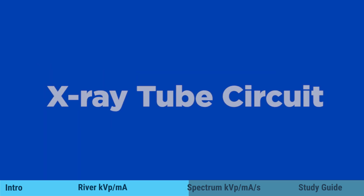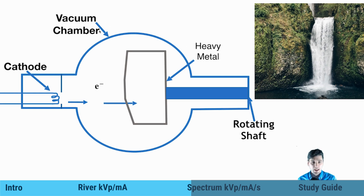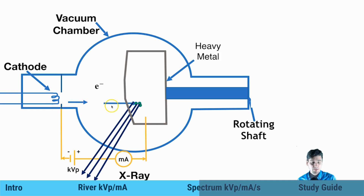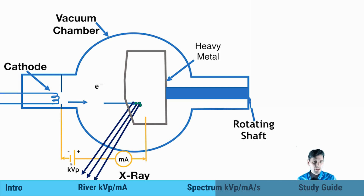So what we're talking about is the technical parameters of an x-ray tube. We have a cathode where the electrons are boiled off. The electrons are pulled across to the anode via a positive potential. They hit that anode and interact with the heavy metal via Bremsstrahlung and characteristic interactions. Then out comes the x-ray beam. What we want to talk about is the KVP and the MA in this x-ray circuit — the two main parameters we can change to influence the x-ray spectrum.